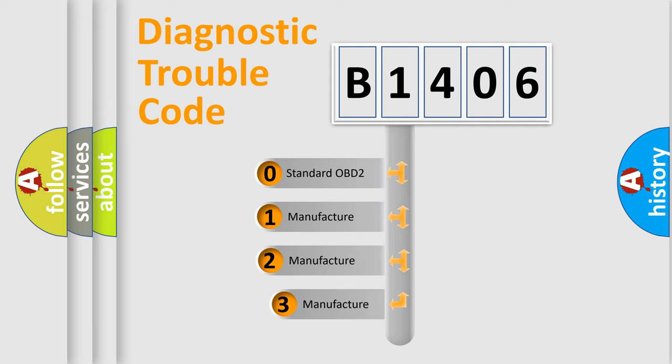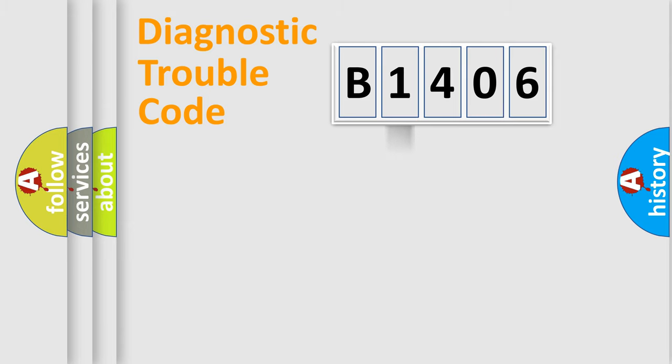If the second character is expressed as zero, it is a standardized error. In the case of numbers 1, 2, or 3, it is a manufacturer-specific expression of the car-specific error.